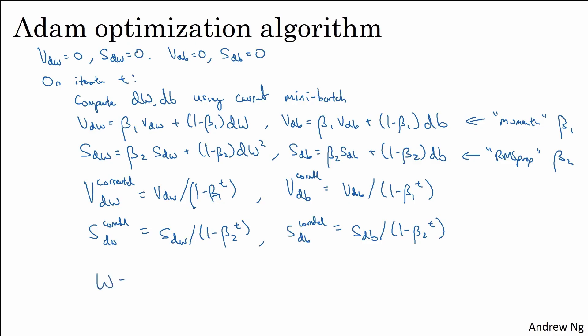Finally, you perform the update. So W gets updated as W minus alpha times, so if we're just implementing momentum, you'd use VDW or maybe VDW corrected. But now we add in the RMSprop portion of this. So we're also going to divide by square root of SDW corrected plus epsilon. And similarly, B gets updated as a similar formula: VDB corrected divided by square root S corrected DB plus epsilon.